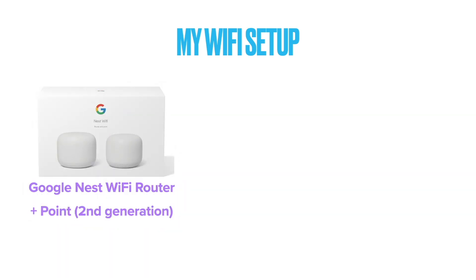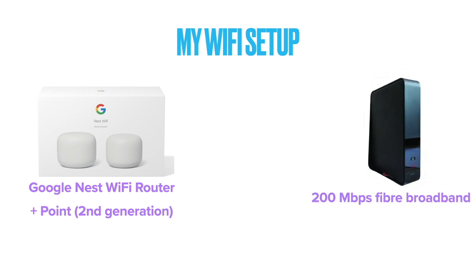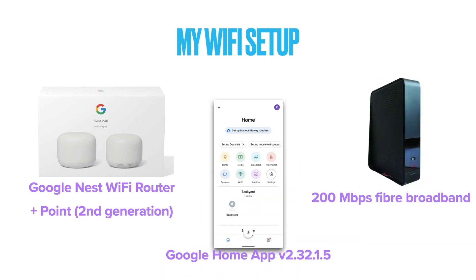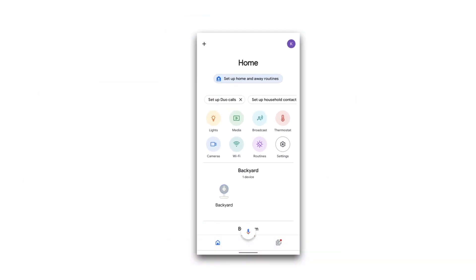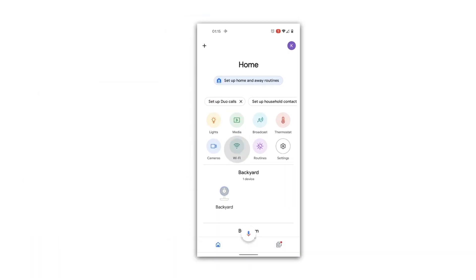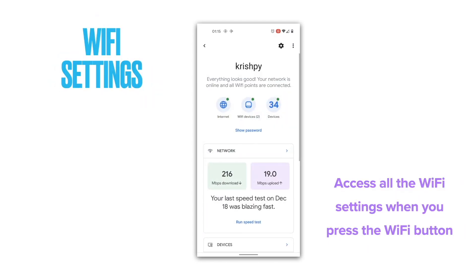Before we start, a quick note about my Wi-Fi setup. I'm using the second generation Google Nest Wi-Fi router with an access point for my 200 megabit fiber broadband internet. I'm also using the latest Google Home app for this video. When you open the Google Home app and click on the Wi-Fi button, you can find all of the Wi-Fi settings and controls here. Let's walk through them all.